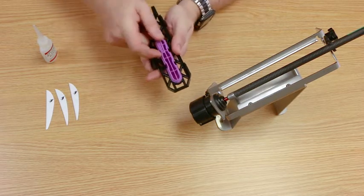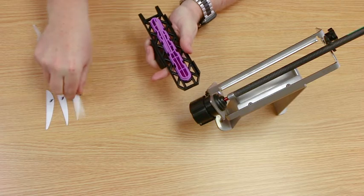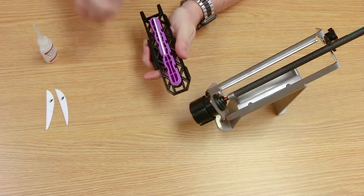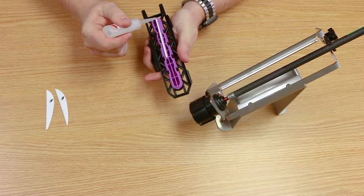First you will want to take and put the insert into the plate. Then you will load your vein into the insert and apply your glue.